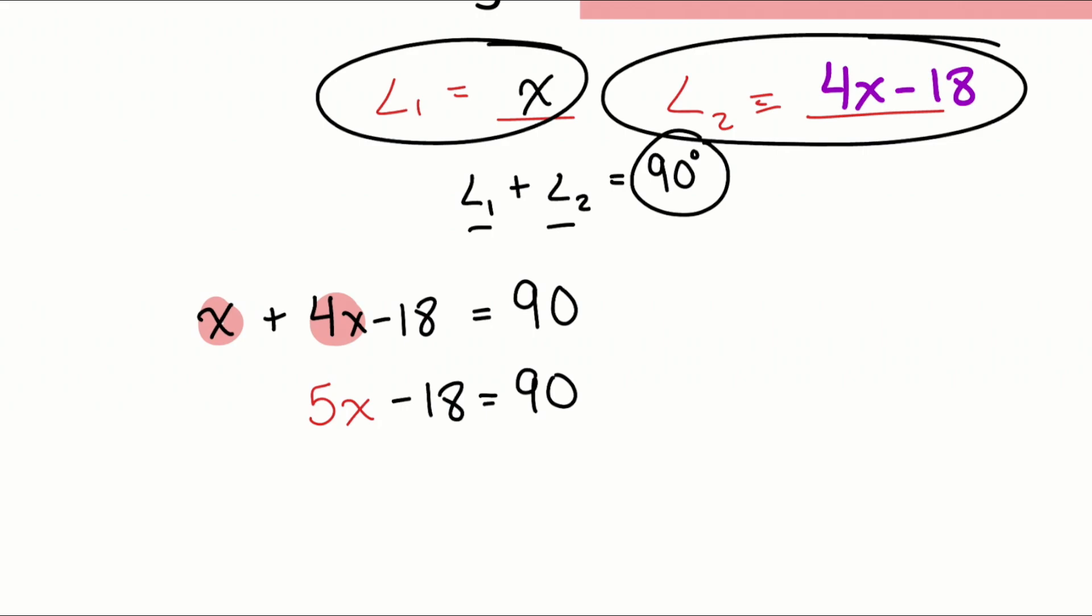And then the next thing we do, we're trying to get that X by itself. So I'll remove the 18 from both sides. So I'll go ahead and add, because remember, we're doing the opposite operation. So we'll add 18, add 18 right there, nice and easy.